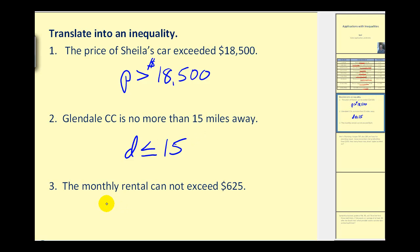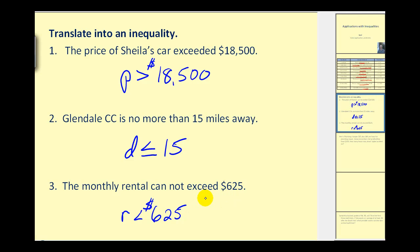And lastly, the monthly rental cannot exceed $625. So it can't be more than this, so of course it could be less. But the question becomes: can it equal 625? And it can, because $625 does not exceed $625. So the rental is less than or equal to $625.